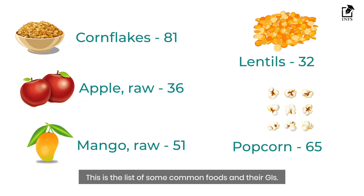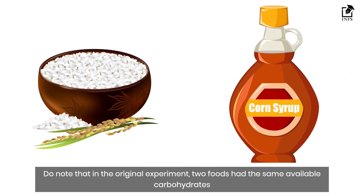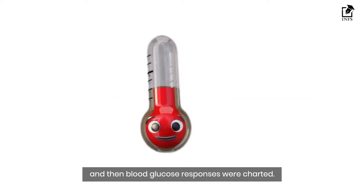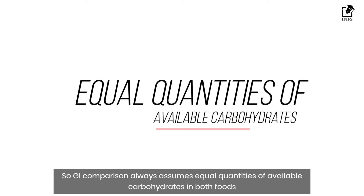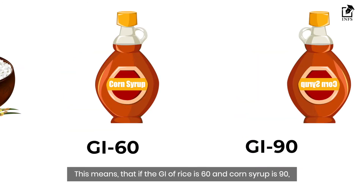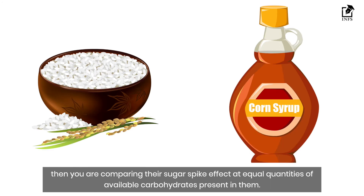Here is a list of some common foods and their GI values. Now let's look at the problems with GI. In the original experiment, two foods had the same amount of available carbohydrates before blood glucose responses were charted. So GI comparison always assumes equal quantities of available carbohydrates in both foods. This means that if the GI of rice is 60 and corn syrup is 90, you are comparing their sugar spike effect at equal quantities of available carbohydrates.